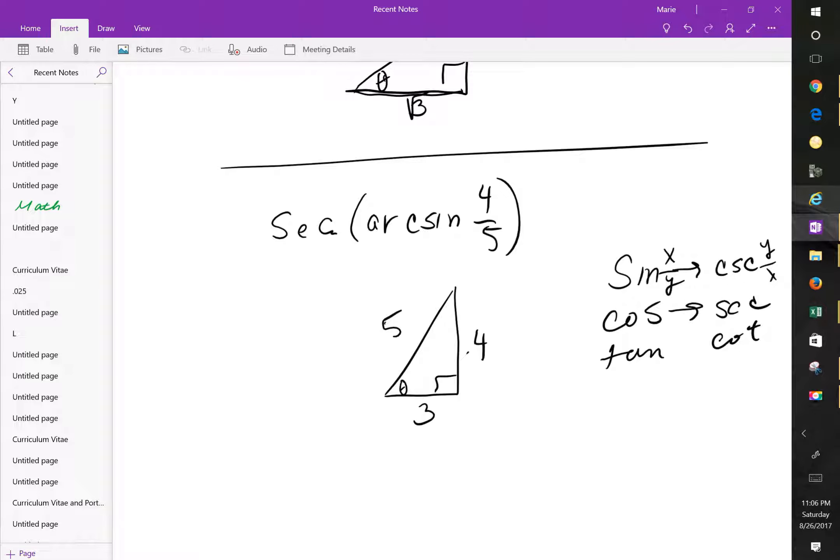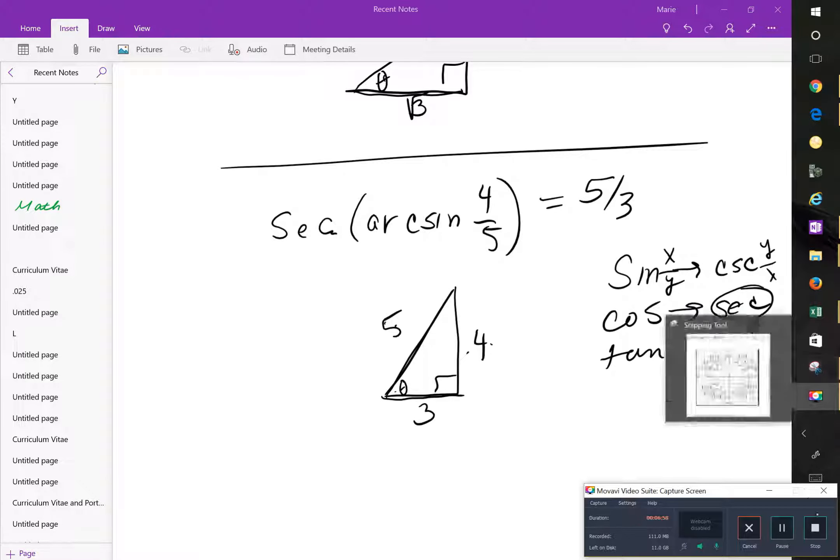Again, so sine of this would be that value. If I'm looking for secant, I'm looking for the inverse, so cosine will give me 3 fifths. That's true, but I'm looking at secant of that. So, in this case, my final answer should be 5 thirds. All right. Hopefully, you find that helpful. Thank you.